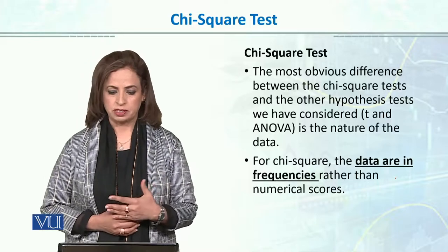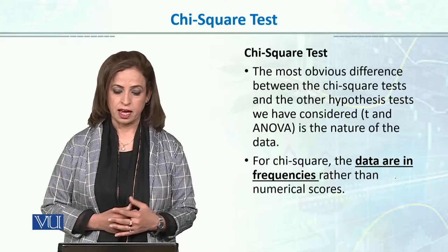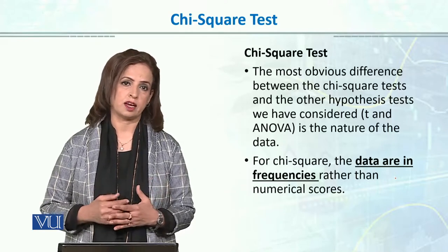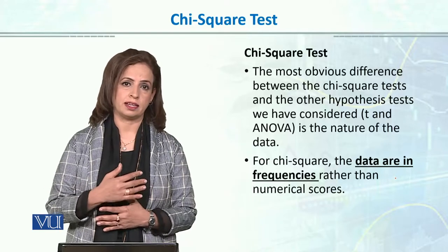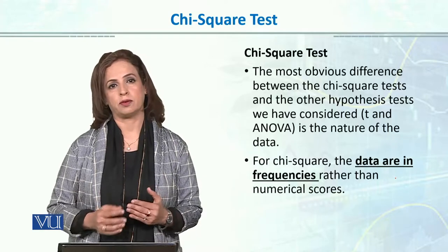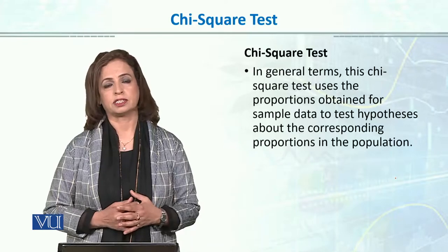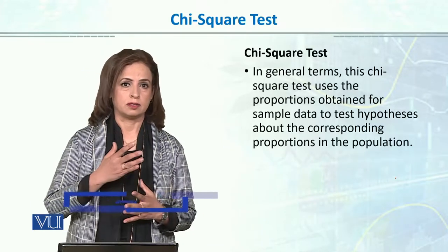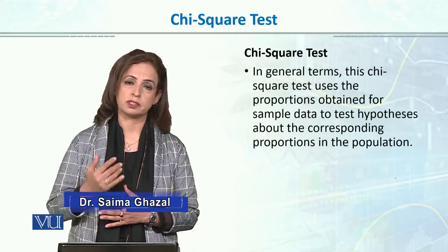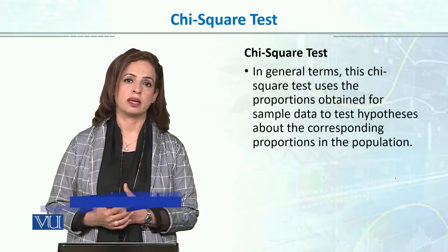The most obvious difference between the chi-square test and other parametric tests — such as T or Z, etc. — is that T and ANOVA use data scores, whereas chi-square uses data in frequencies. For example, if we look at the relationship between smoking and health, we count how many are smokers and how many are non-smokers.